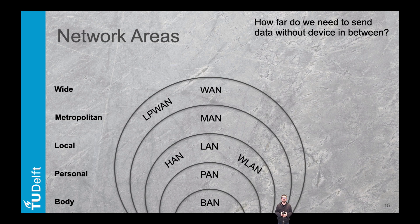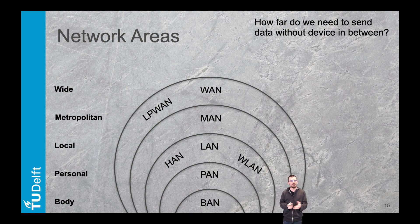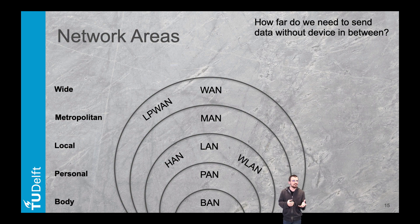Let's briefly scan through different types of network areas. Starting small, we have what we call a Body Area Network, or BAN. These networks are designed for connecting devices on the human body and are especially used for connected clothes. Building on this technology, the Personal Area Network, or PAN, reaches out further — such networks focus on the person's workspace.